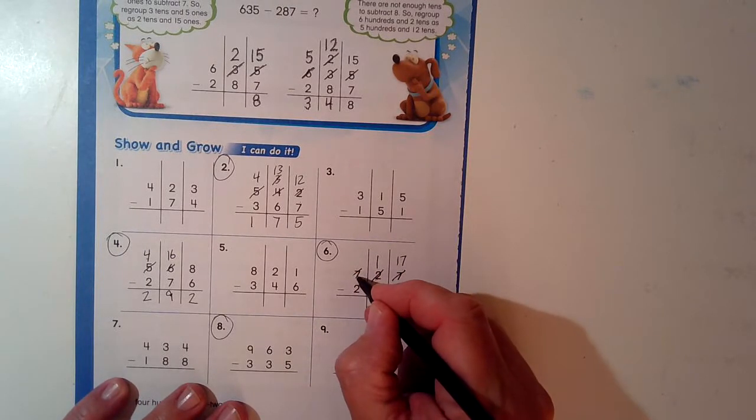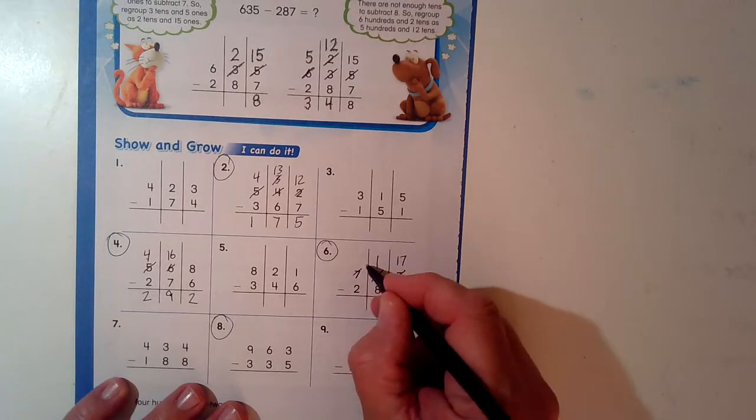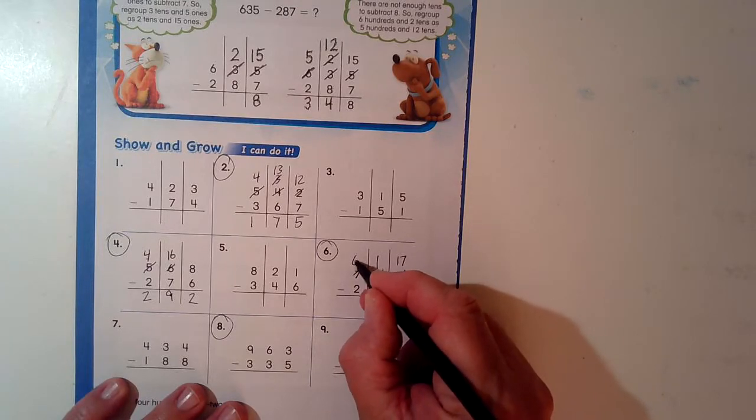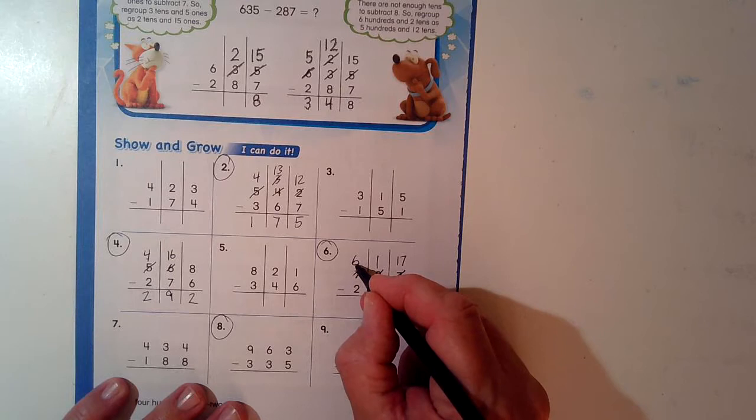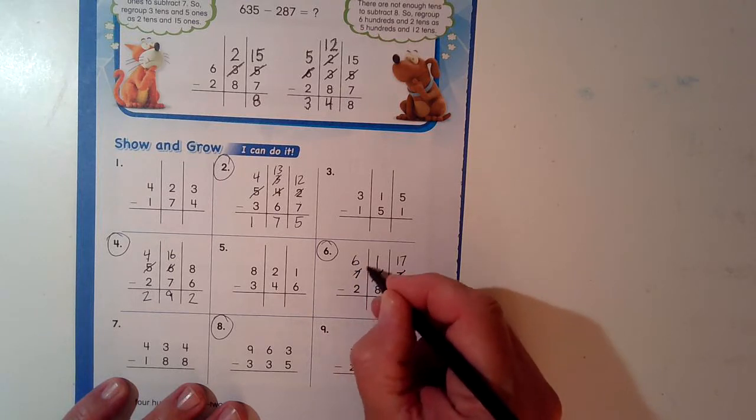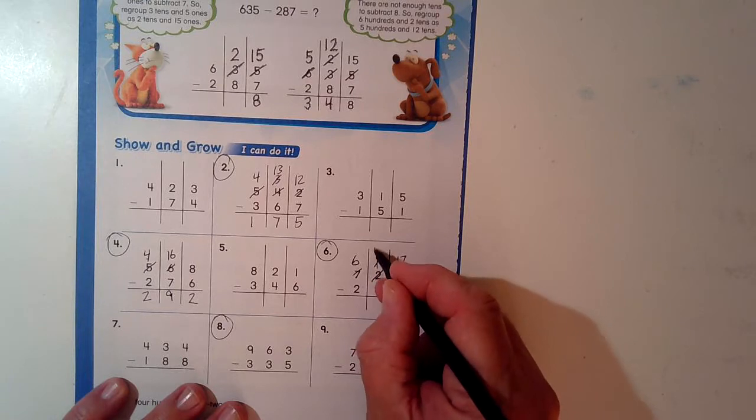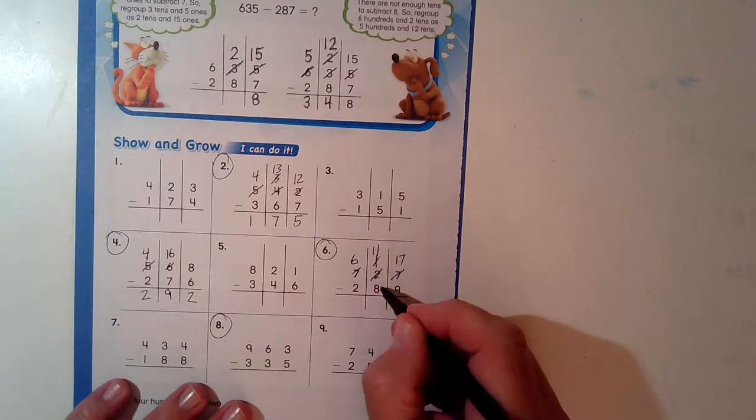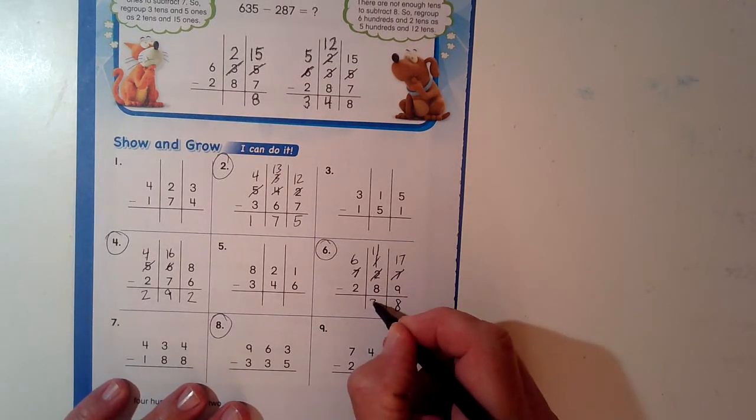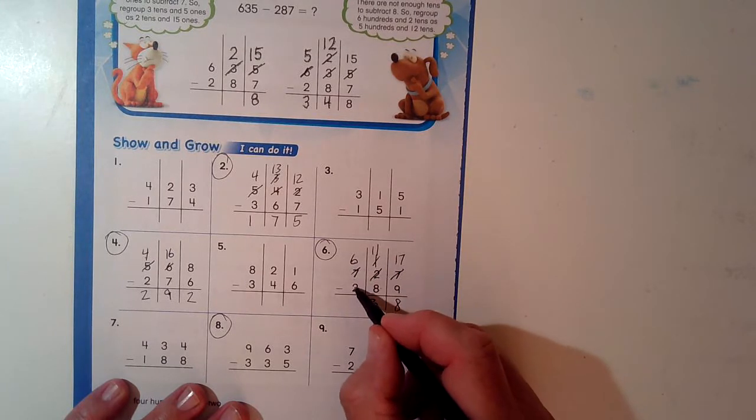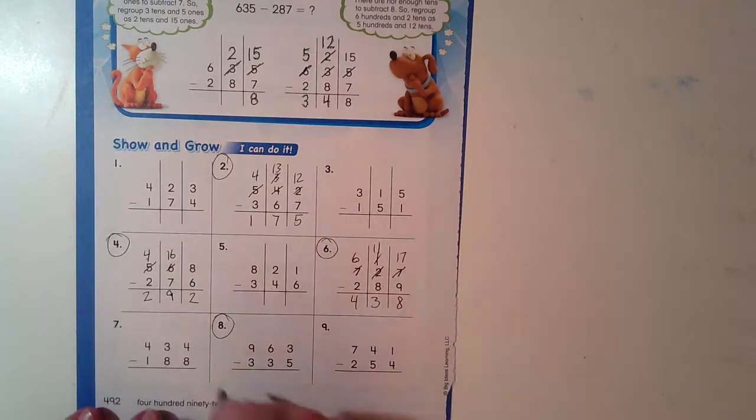So I take one of these hundreds and I break it up into 10 tens. Right? That's what we're doing. So now I have 6 hundreds instead of 7. And one of the sets of hundreds goes over here. 10 plus 1 is 11. 11 minus 8 I can do. And that gives me 3. 6 minus 2 is 4.